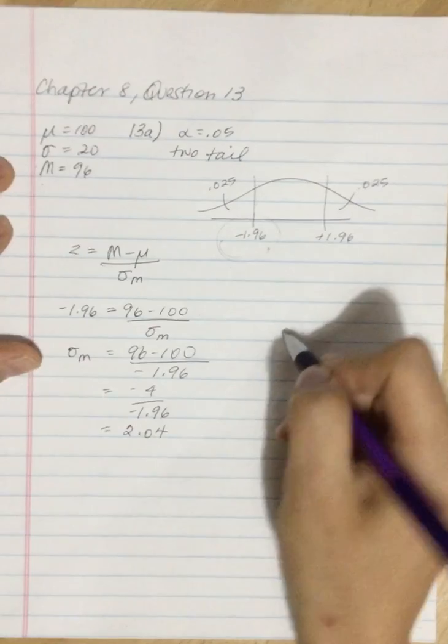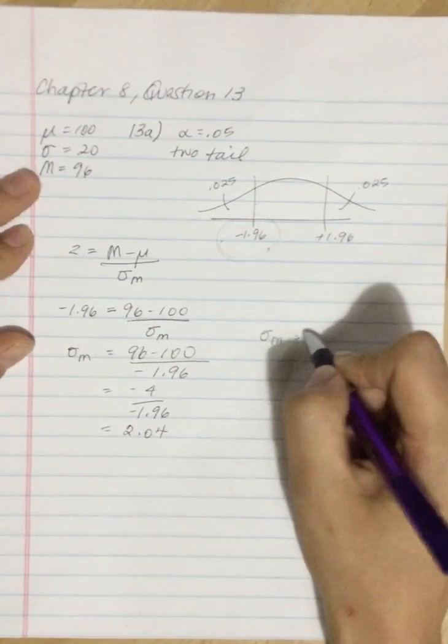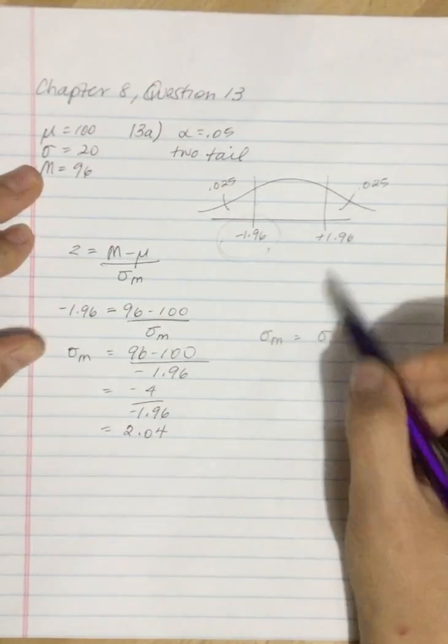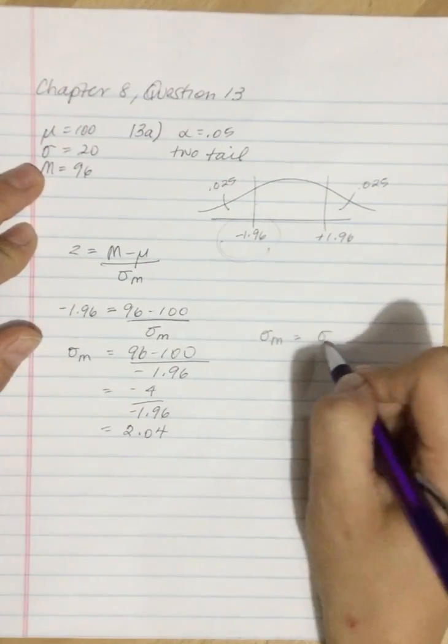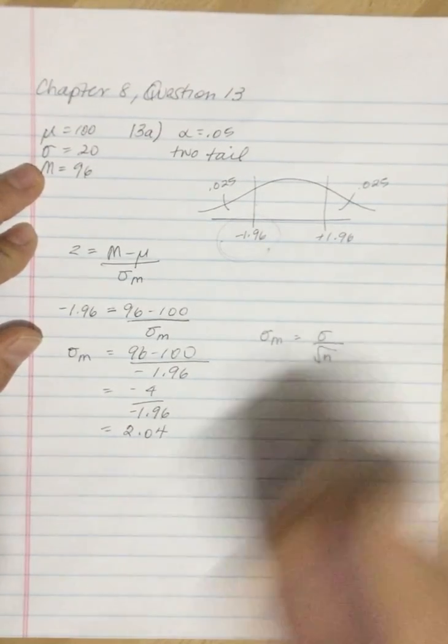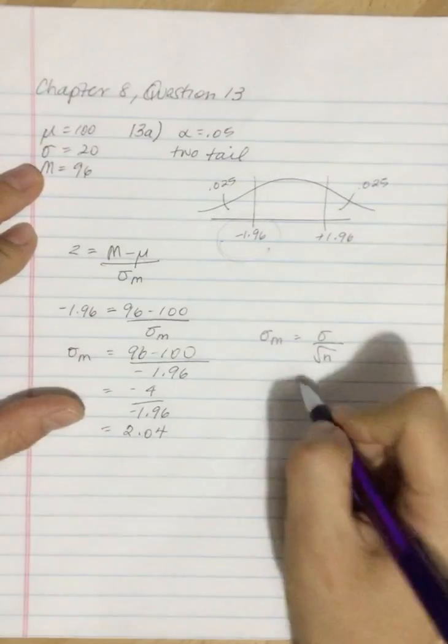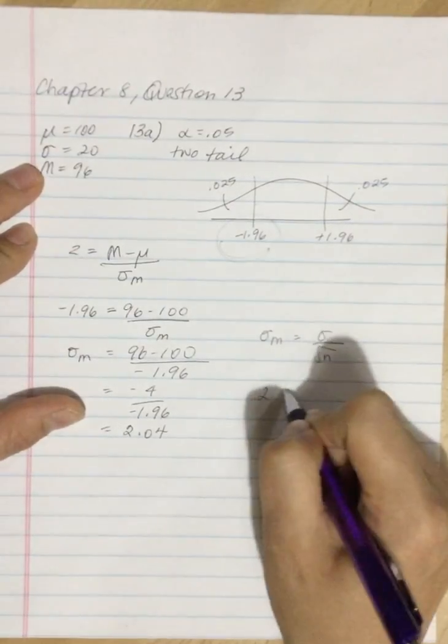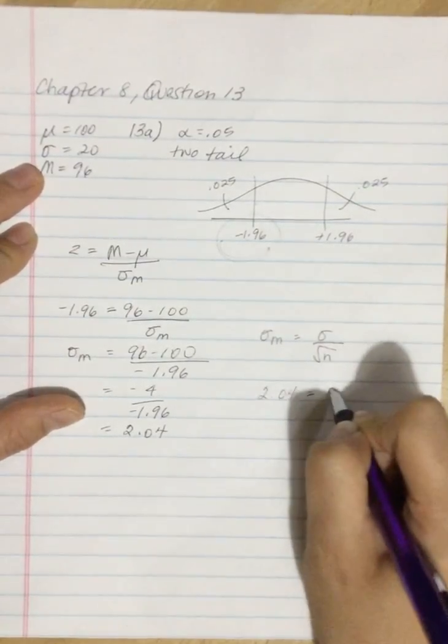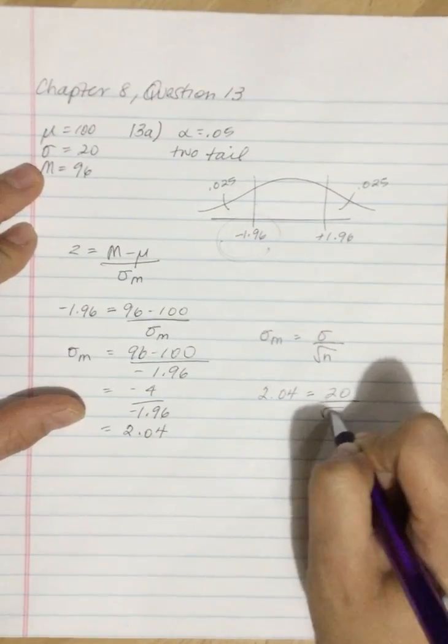And what we can then do is plug that into our formula for the standard error, which is the standard error equals the standard deviation divided by the square root of n. So we can have 2.04 equals 20 divided by the square root of n.